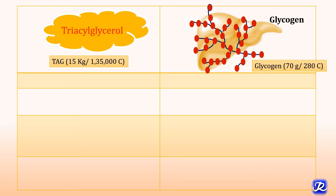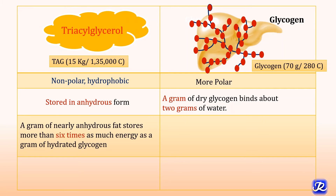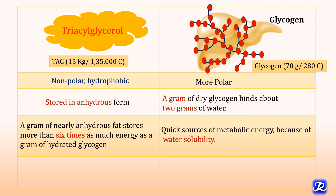Triacylglycerol is the form of energy storage for lipids, and glycogen is the form of energy storage for carbohydrates. Triacylglycerol is stored in the adipose tissue and glycogen is stored in the liver. TAG is non-polar and hydrophobic, while glycogen is more polar. TAG is stored in anhydrous form — it does not require water for its storage, while glycogen requires water. One gram of dry glycogen requires 2 grams of water for its storage, and one gram of anhydrous fat stores more than 6 times as much energy as a gram of hydrated glycogen.